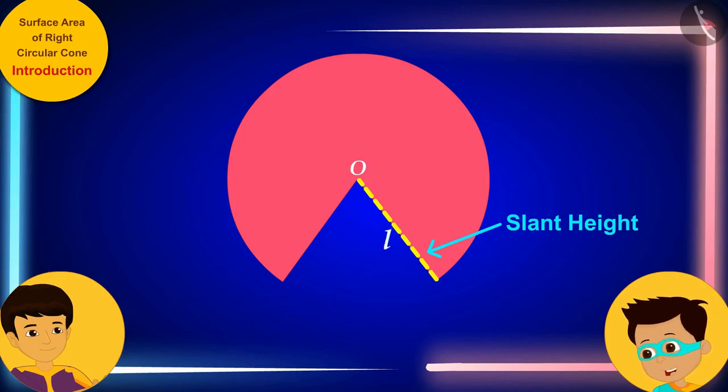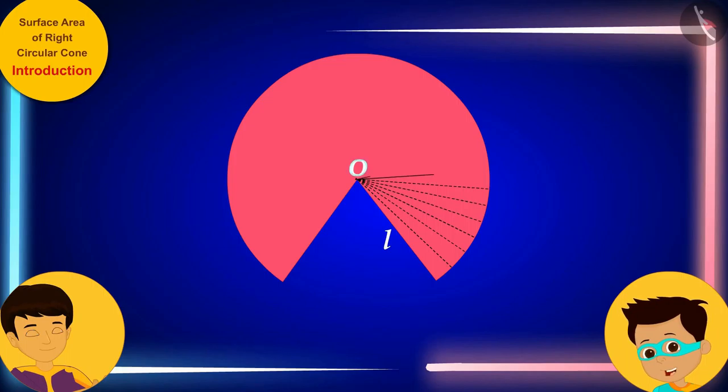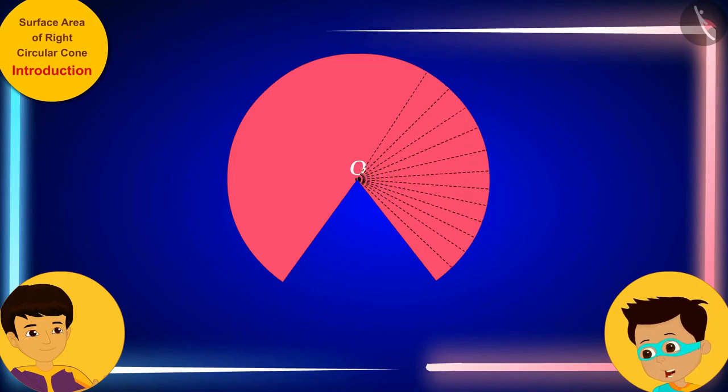Now, if we divide the paper into hundreds of small pieces by lines going from O, then these sliced parts will look almost triangular in shape. And the interesting thing is that the height of each of these is equal to the slant height L of the cone.